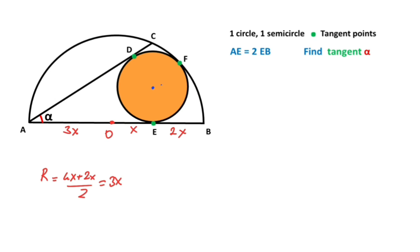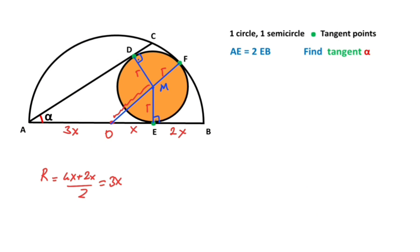Likewise, let point M be the center of the circle. If we connect these two points, the angle here must be 90 degrees because of the tangent, and here is also 90 degrees. If we connect these three points, they must be collinear because of the tangent. I want to represent the radius of the circle with r, so these segments are also r units. Notice that this length must equal 3x minus r.